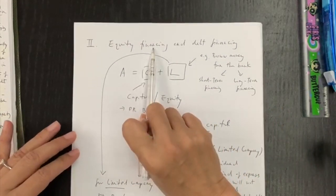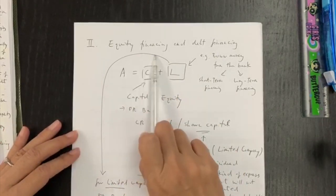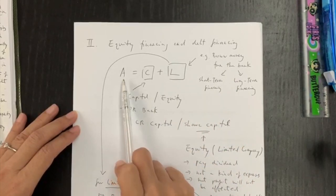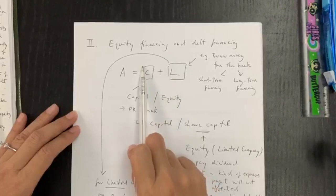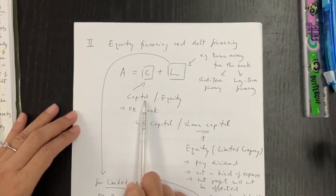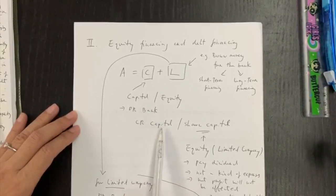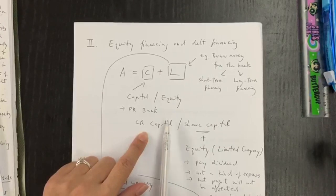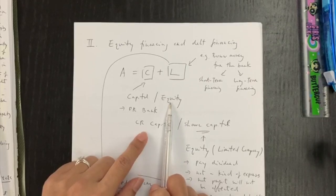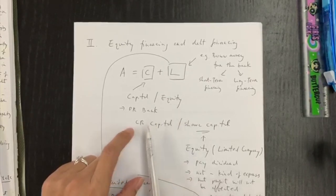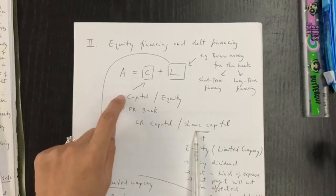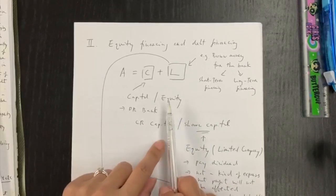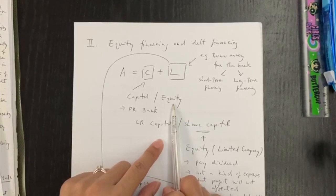Now we come to Part 2: Equity Financing and Debt Financing. Going back to the accounting equation: Assets equals Capital plus Liabilities. Capital means the money introduced by the owner. If it is not a sole proprietorship but a public limited company, we don't call it capital — we change the name to share capital. There is also another name replacing capital, and we call that equity. So capital is the same as equity when it is a limited company.